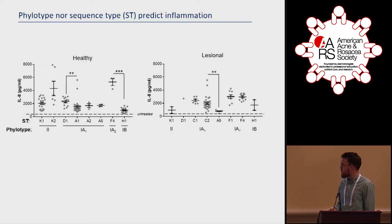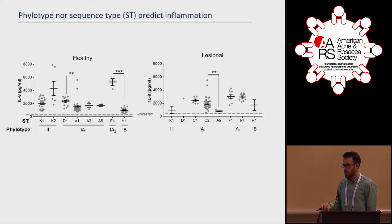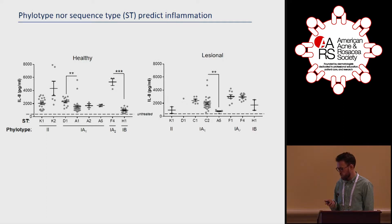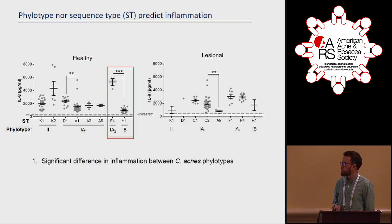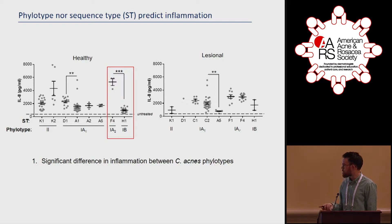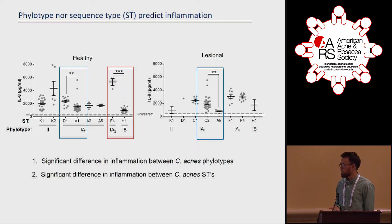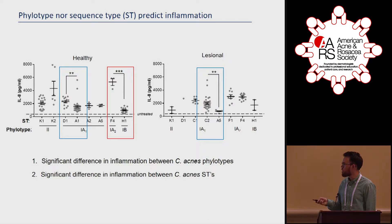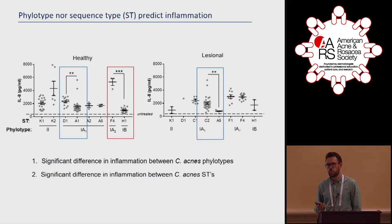Looking at the functional IL-8 data comparing healthy versus lesional isolates: we found a significant difference in inflammation between C. acnes phylotypes — in healthy isolates, the 1A2 phylotype was significantly more inflammatory than 1B. Particularly interesting was a significant difference in inflammation even between sequence types within the same phylotype. In healthy isolates, D1 isolates were significantly more inflammatory than A1, and in lesional isolates, C2 sequence types — which are frequent on lesional skin — were significantly more inflammatory than A5.